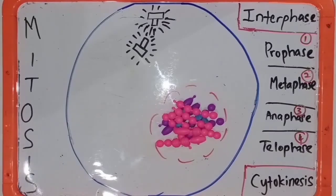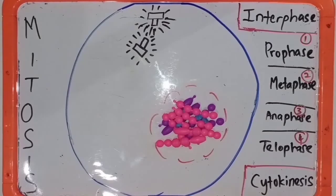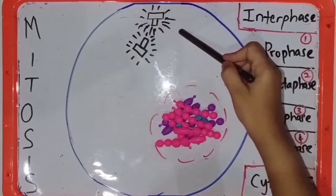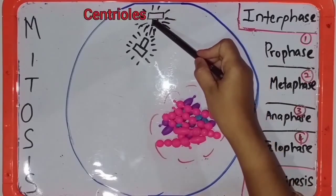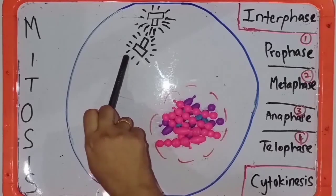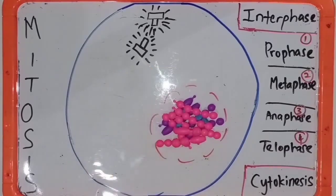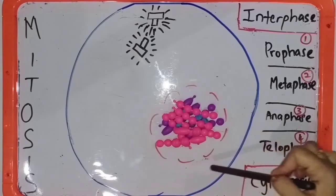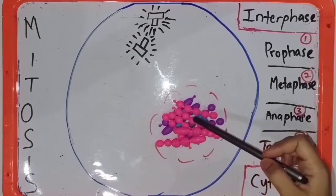Before demonstrating chromosome movement during mitotic cell division, let me explain about the interphase first. During the interphase stage, the cells undergo growth. Chromatin starts to replicate and chromosomes duplicate. Then two centrosomes form by duplicating one centrosome. Each centrosome consists of two centrioles. The aster is a ray of short microtubules that extend from the centrosome. During interphase, the chromatin is surrounded by the nuclear envelope and is less condensed and invisible.